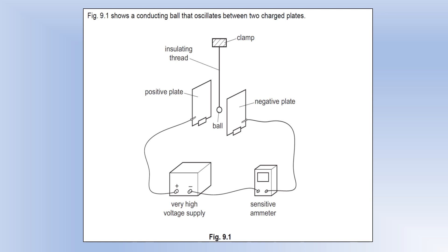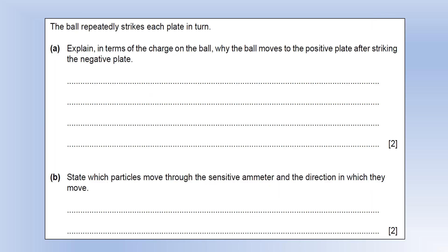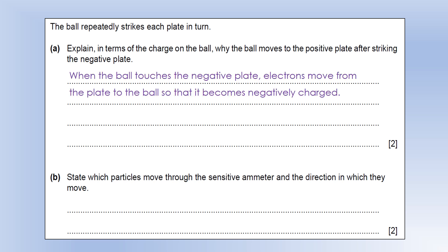We've got a conducting ball that oscillates between two charged plates. We've got a positive plate on the left, a negative plate on the right, and we've got an ammeter to measure any current. The ball repeatedly strikes each plate in turn. Explain in terms of the charge in the ball why the ball moves to the positive plate after striking the negative plate.